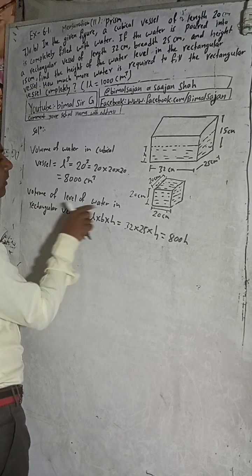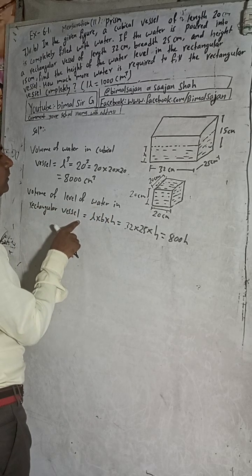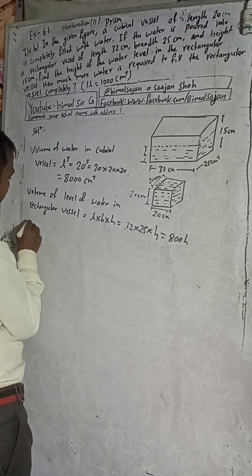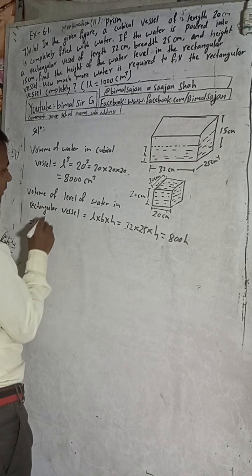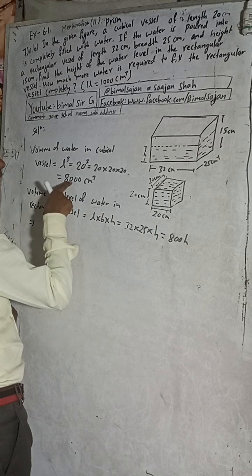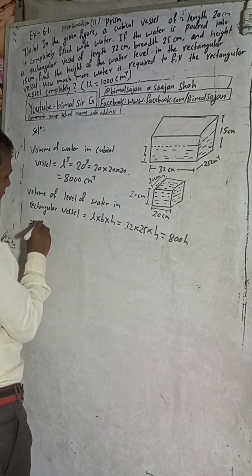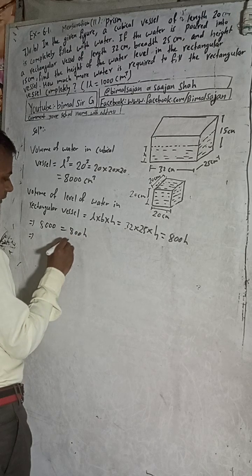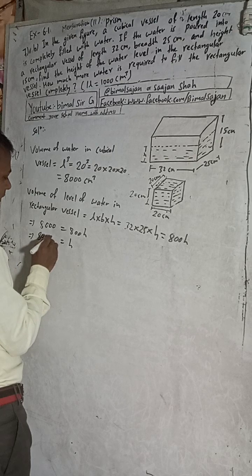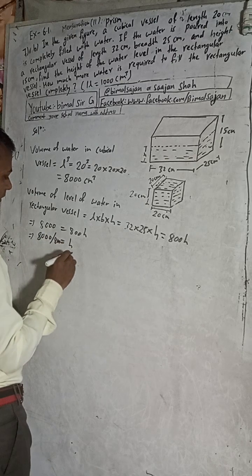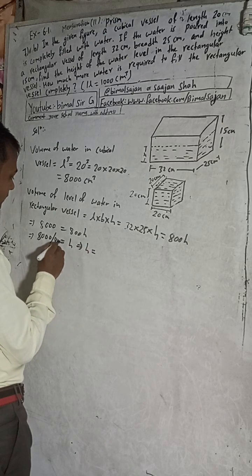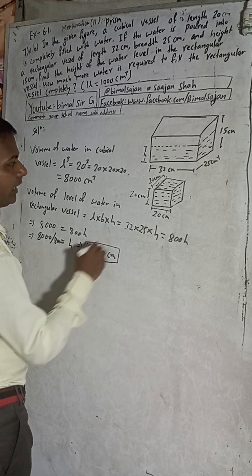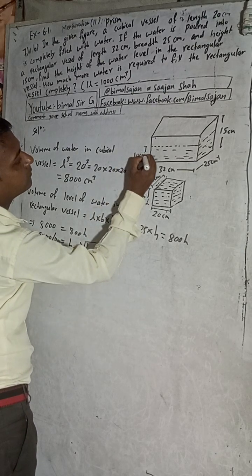The volume of water level in the rectangular vessel will be equal to the volume from the cubical vessel, which was 8000. So 8000 = 800 × H. When 800 goes to the other side it divides: H = 8000 ÷ 800 = 10 cm. So the height is 10 cm.